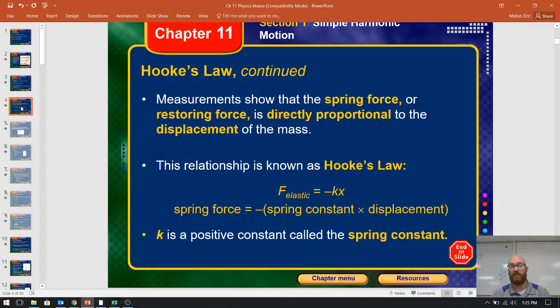X is the displacement. That should look vaguely familiar because we use PE of elastic. That was the one half spring constant times X squared. That gives you the potential energy. This gives you the spring force. Huge difference. Just understand K is still the spring constant.